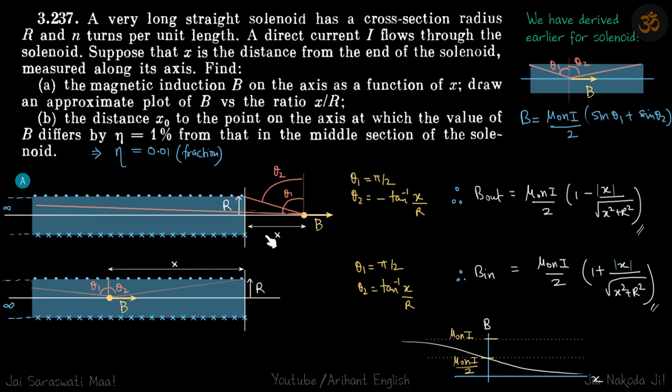In first case let's take x outside the solenoid. Theta 1 is almost 90 degrees because this coil is very long. We will take theta 1 as pi by 2 and theta 2 as minus tan inverse x by r. Theta 2 will be negative. When the point is inside the angles are positive. If a point goes outside then one of the angles will become negative.